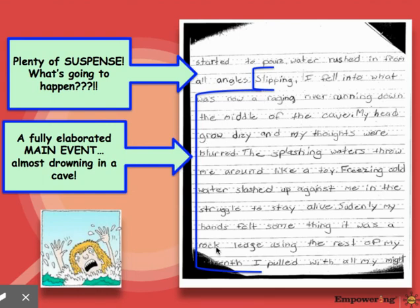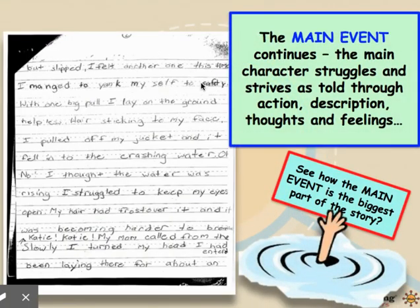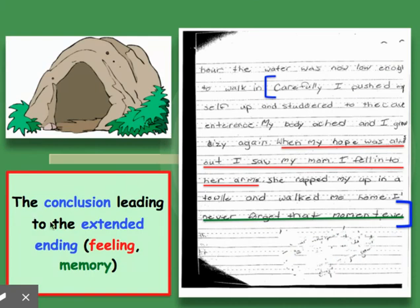And this is the main event — you'll notice it's the biggest part of the writing. The main event is when the character almost drowns in a cave. The main event continues on the next page. The main character struggles and thrives as told through action, description, thoughts, and feelings. Do you see how the main event is the biggest part of the story? The conclusion leads to the extended ending, which gives a feeling and a memory.